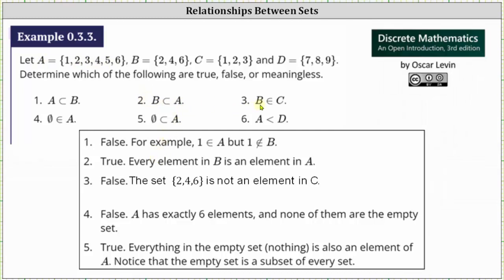For number three, B is an element of C. In order for B to be an element of C, the entire set B must be an element in set C. Set C only contains the elements one, two, and three. C does not contain any sets as elements and therefore B is an element of C is false.